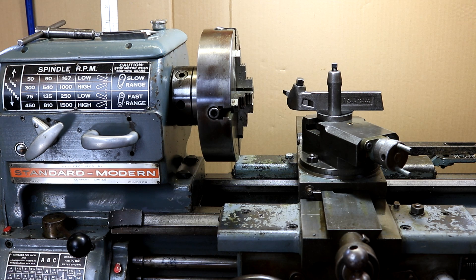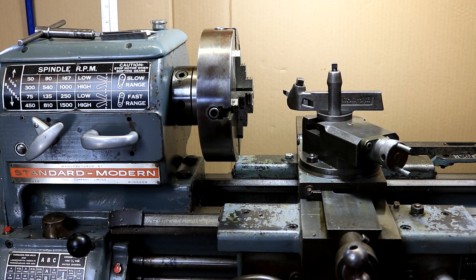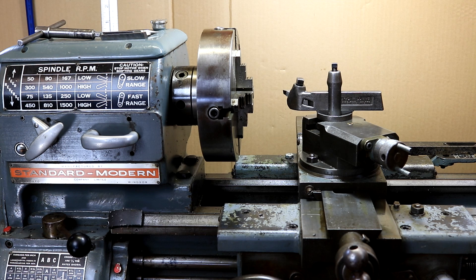You're probably here because you're thinking about buying a quick change tool post. Although the specifications that the manufacturer gives are in ranges and it seems like an easy decision to make based on the information, for example, the manufacturer will spec that an AXA size tool post will fit a lathe with a swing from 6 to 12 inches and a BXA tool post will fit a lathe with a swing of 10 to 15 inches.